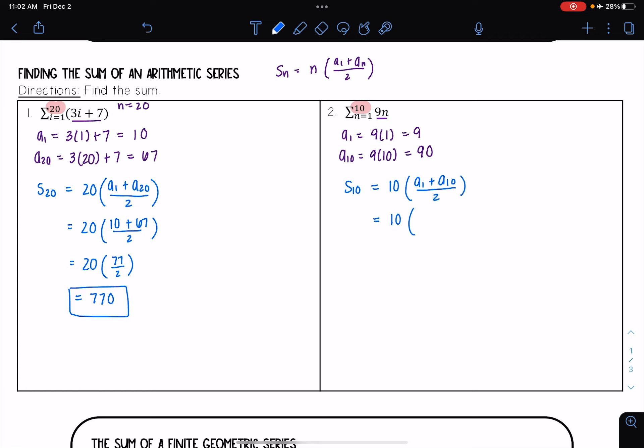Well a1 we found to be 9. A10 we found to be 90 over 2. 9 plus 90 I get 99 divided by 2. And when I do 99 divided by 2 I get 49.5. And when I multiply that by 10 then I get 495.